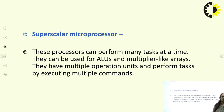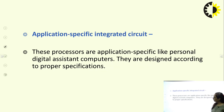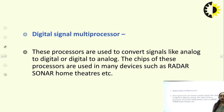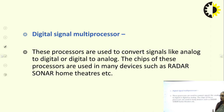Superscalar microprocessors, as their name implies, can perform many tasks at the same time. They can be used for ALU multipliers like arrays, have multiple operation units, and perform tasks by executing multiple commands. Application Specific Integrated Circuits (ASIC) are application-specific — first the specifications are noted down and then the processor is designed. Finally, Digital Signal Microprocessors (DSP) are used to convert analog signals to digital or digital to analog, and their chips are used in devices such as radar, sonar, and home theaters.